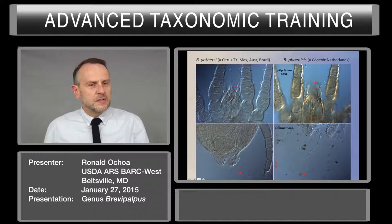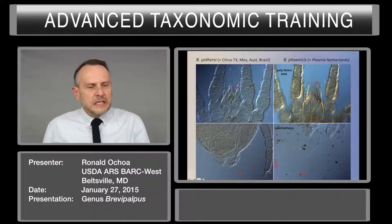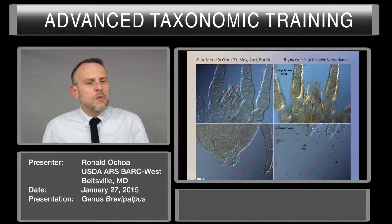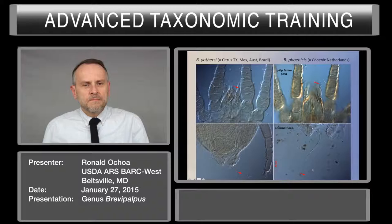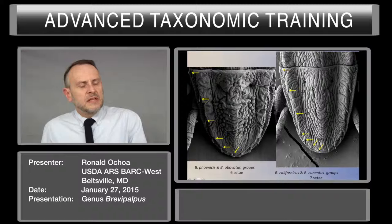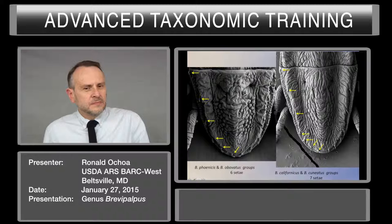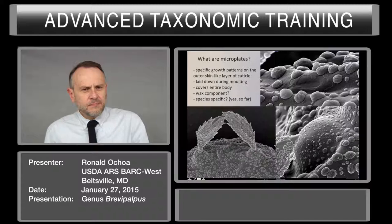Here are more characters to help you separate Brevipalpus yoderi from Brevipalpus phoenicis. The red arrows at the top indicate the different shape of the palp tarsus seta. On the lower area, the spermathecae. As you can see clearly, there are two different spermathecae — one has a shape of a peanut with two projections on either side, while the other one looks almost like a zika. Other species are also easy to separate by the presence or absence of seta F2. Phoenicis and Ovatus have six pairs of setae in the opisthosoma dorsal area, while Californicus and Cuniatus have seven pairs of setae in the dorsal lateral area of the opisthosoma.